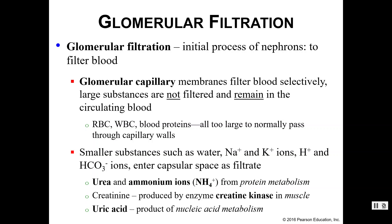If you find any of those large substances in your urine, that is a sign that something is going wrong. Smaller things like sodium, potassium, hydrogen ions, bicarbonate ions, and glucose are small enough to enter the capsular space and become filtrate. This also includes urea, ammonium — which come from protein metabolism — creatinine, produced by creatine kinase during muscle physiology, and uric acid, a byproduct of nucleic acid metabolism.